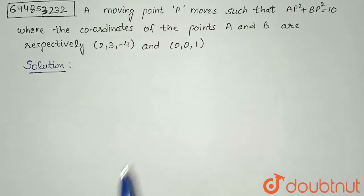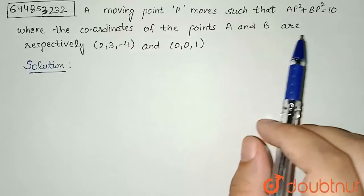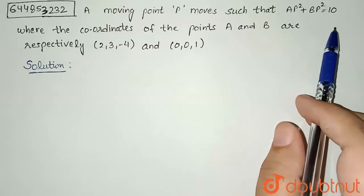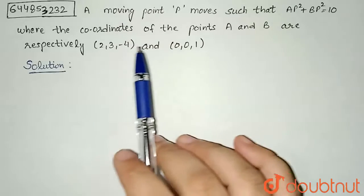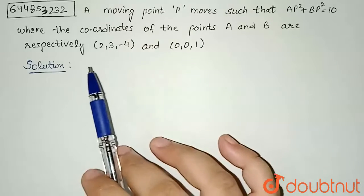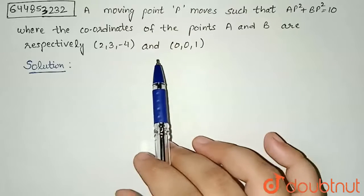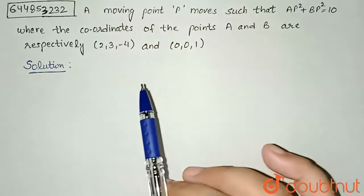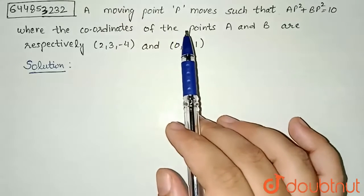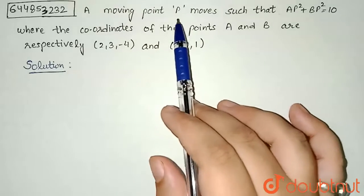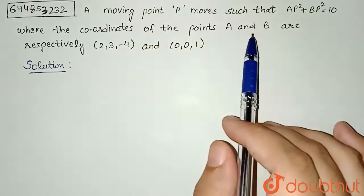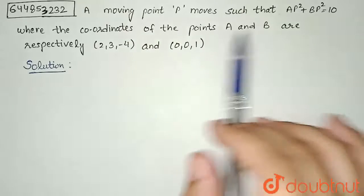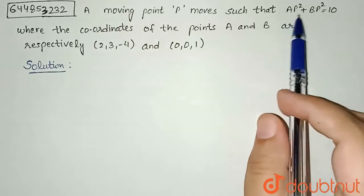Hello everyone, the question is: a moving point P moves such that AP² + BP² = 10 where the coordinates of the points A and B are respectively (2, 3, -4) and (0, 0, 1). In this question we are supposed to find the locus of this moving point P and we are given the coordinates of A and B and relation between the points A, P, and B.